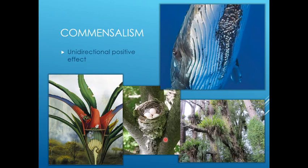Same with birds in a tree — birds nesting in a tree derive a huge benefit, but the tree doesn't care whether there's a nest or not. Same thing with epiphytes — plants that are growing on top of other plants. You don't find too many around here, but if you go into rainforests and more humid areas, they're very, very common. In rainforests, a significant portion of the primary productivity is actually due to epiphytes growing on other trees and plants.